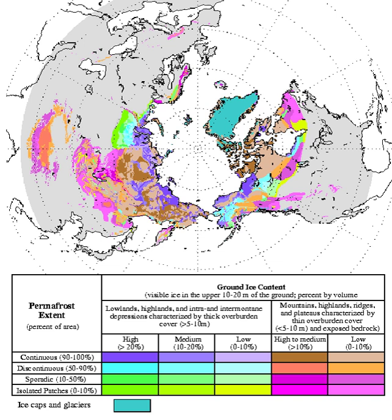In the Southern Hemisphere, most of the equivalent line would fall within the Southern Ocean if there were land there. Most of the Antarctic continent is overlain by glaciers, under which much of the terrain is subject to basal melting. The exposed land of Antarctica is substantially underlain with permafrost, some of which is subject to warming and thawing along the coastline.